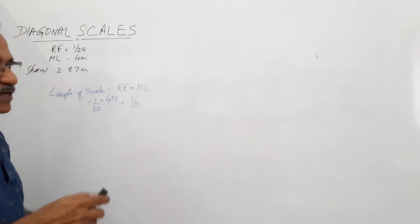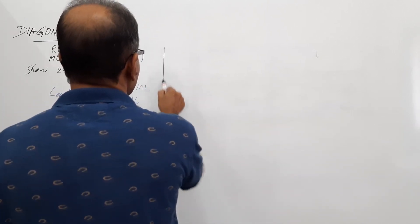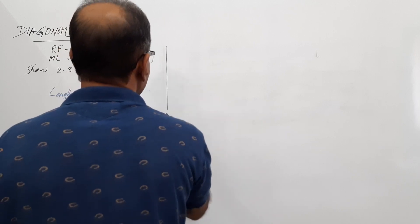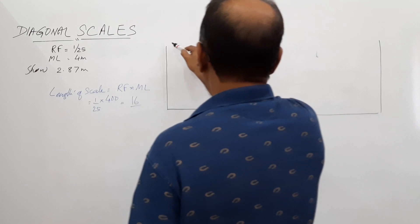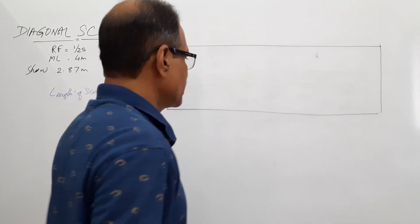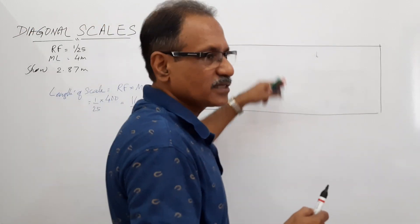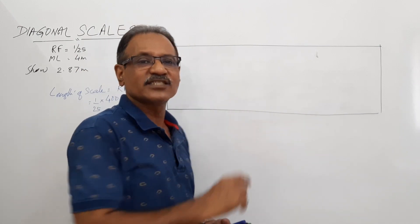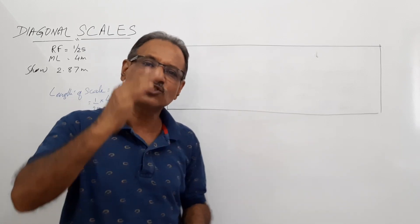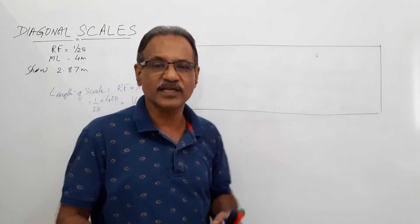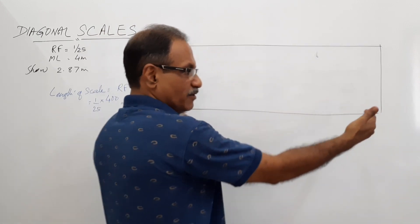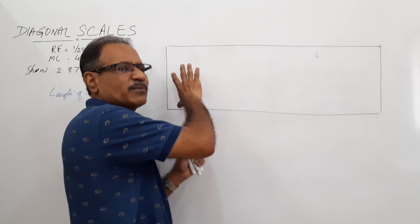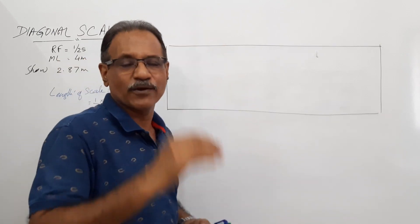The length of the scale is 16 centimeters. We draw a rectangle whose length is 16 centimeters. The height can be any width — in a plain scale we have seen that the width of 1 centimeter is reasonably good; in diagonal scales the width can be about 3 to 5 centimeters. If the length is say 15, 16, or 20 cm, then 5 centimeters is good enough. If the length is less, say 5 centimeters, preferably take a width of 4 or 3.